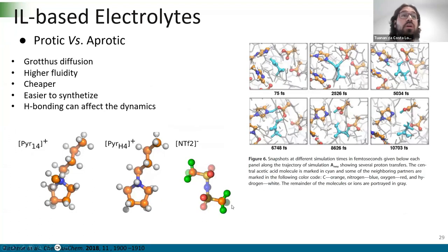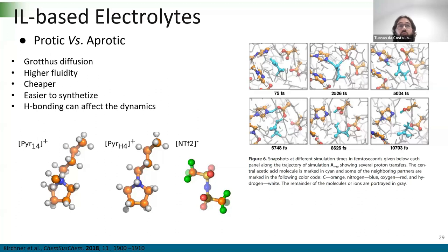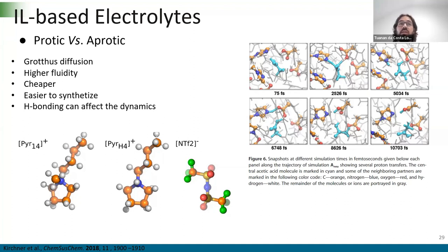In the final part — which is ongoing research — we are evaluating protic ionic liquids versus aprotic ionic liquids. The advantages of protic ionic liquids include the Grotthuss diffusion mechanism, which is proton transfer between ions (though in classical MD we cannot observe proton transfer). Protic ionic liquids are also more fluid, giving better ionic conductivity with larger values than aprotic systems, are easier to synthesize and cheaper, and because they have a protic hydrogen they can form hydrogen bonds, which can change electrolyte behavior.